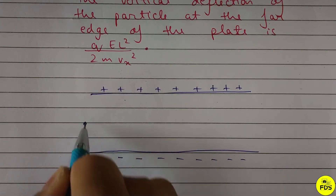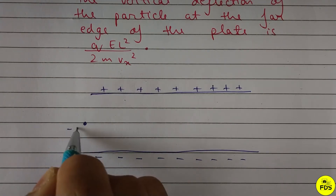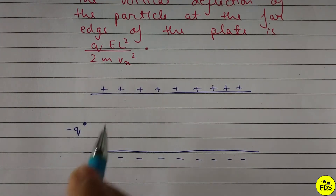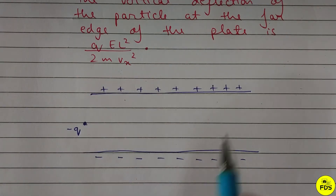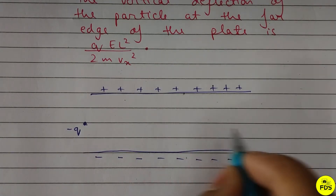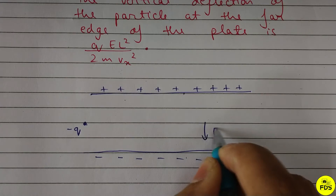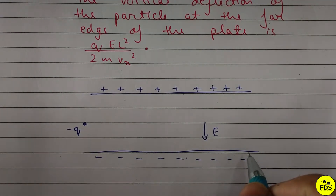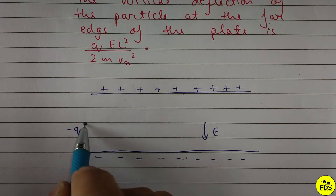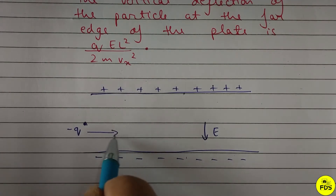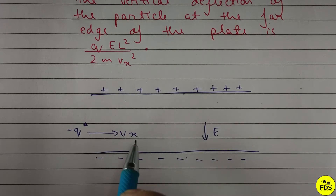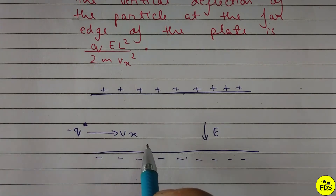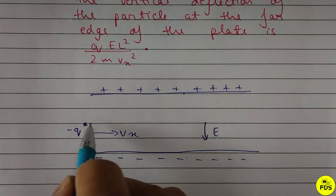A minus q charge enters between the plates. The electric field acts downward, from positive to negative plate. The velocity vx is in the horizontal direction — that is, vx is along the x-axis.